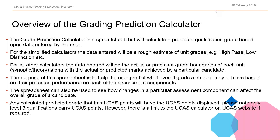The purpose of these calculators is to help the user predict what grade a candidate may achieve at the end of their course based on projected performance on each assessment component. It can also be used to see how different marks awarded on a particular assessment component can affect the overall grade of the qualification. All calculated predicted grades that carry UCAS points will have those UCAS points displayed, however a link to the UCAS points calculator on the UCAS website is included if required.